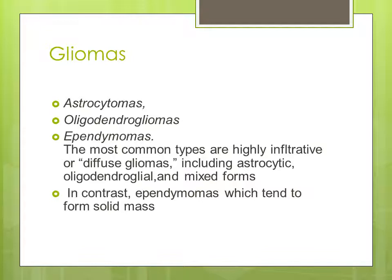One of the most common primary CNS tumors is gliomas. Gliomas are divided into astrocytoma, oligodendrogliomas, and ependymomas. The most common type is a highly infiltrative or diffuse glioma, which includes astrocytic, oligodendroglial, and mixed forms. In contrast, ependymomas tend to form as a solid mass.